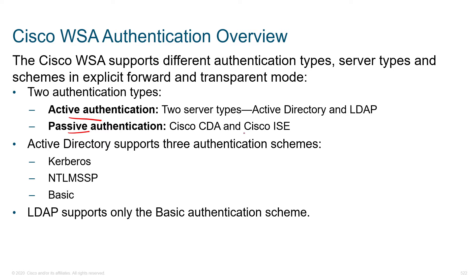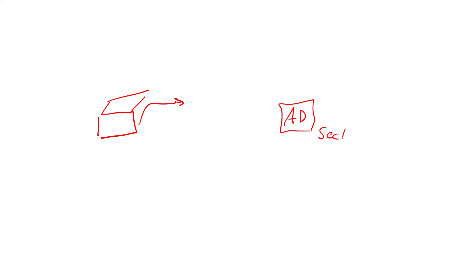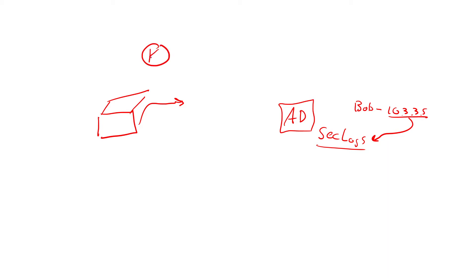Passive authentication uses an intermediate agent called the Context Directory Agent (CDA), and it leverages ISE. Assuming we've got an ISE solution to talk to, here's how it works: users — sometimes called supplicants — come into the organization and authenticate to Active Directory. Active Directory maintains a security log recording who logged in and who didn't, including failed and successful authentication attempts. So if we have a user called Bob at IP address 10.3.3.5, that mapping is recorded in the security logs.